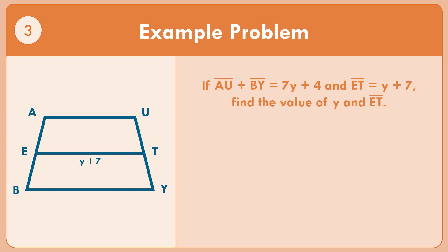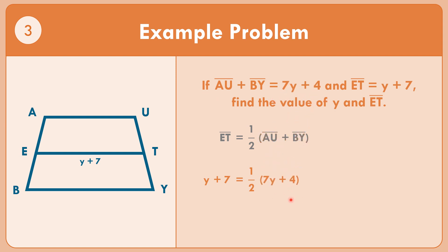In example number three, if segment AU plus segment BY equals 7Y plus 4 and segment ET equals Y plus 7, find the value of Y and segment ET. The formula: segment ET equals one-half times the quantity segment AU plus segment BY. So segment ET equals one-half times the quantity 7Y plus 4.